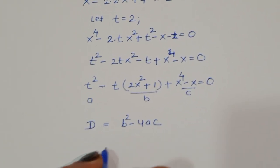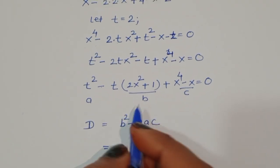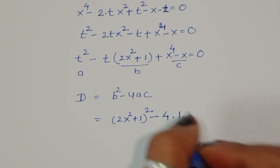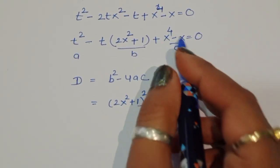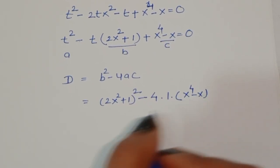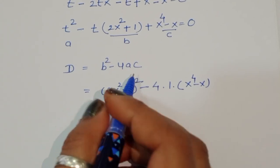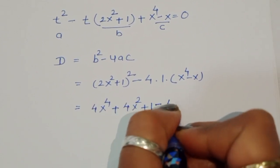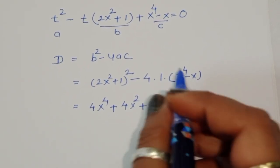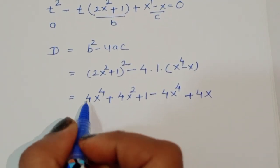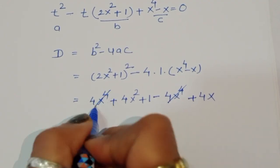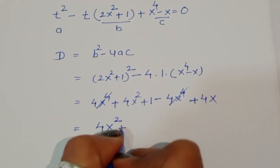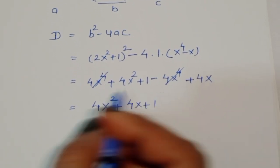So d equals 2x squared plus 1, whole square, minus 4 times 1 times x power 4 minus x. Expanding: 4x power 4 plus 4x squared plus 1 minus 4x power 4 plus 4x. The 4x power 4 terms cancel, leaving 4x squared plus 4x plus 1.